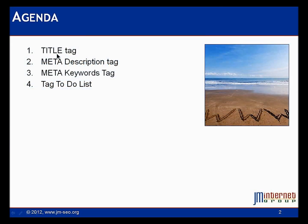So we know our keywords. Where do we put them? Our agenda is we're going to learn the importance of the title tag — what it is, how it works, how we use it for our keywords in SEO. We're going to look at the meta description tag and talk about it. We're going to talk about the meta keywords tag and learn that it's essentially ignored. And then we're going to end up with the tag to-do list. This is the biggest ROI — the quickest fix for most websites is to fix their tags.